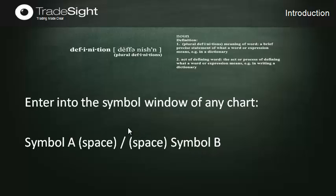Just to recap: we're going to put in one symbol, then a space, then a slash, then another space, and then the second symbol that we want to evaluate. That will yield us our ratio for the ratio chart. Let's take a look at a couple of symbols and see how this actually works in real time.